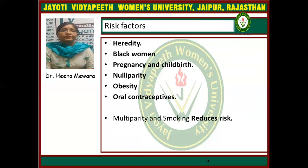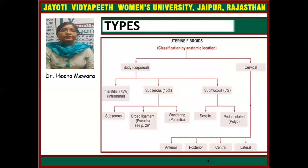The risk factors include positive family history, being a Black woman, pregnancy, childbirth, nulliparity, obesity, and use of oral contraceptives. Multiparity and smoking reduce the risk of fibroid.